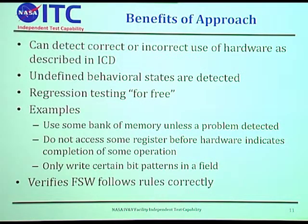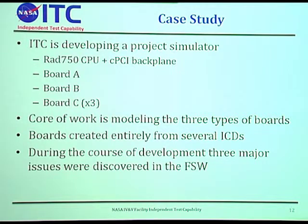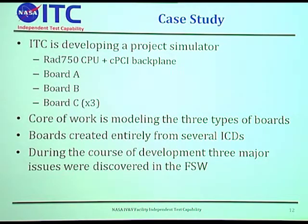For this case study, we're developing a project simulator with a RAD 750 CPU and a compact PCI backplane with five boards: three of board C, a board A, and a board B. The core work is modeling the three types of boards. This is not our first project — our architecture is already laid out and processes are in place. Our first prototype for this project took about two months, compared to six to eight months for the first project. We have reusable 1553, SpaceWire router, and Goddard router components.